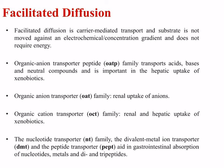Facilitated diffusion is a carrier-mediated transport where the substrate is not moved against an electrochemical or concentration gradient and does not require energy. Examples include the organic anion transporter peptide (OATP) family, which transports acids, bases, and neutral compounds and is important in hepatic uptake of xenobiotics. Other transporter families include the organic anion transporter (OAT) family for renal uptake of anions, and the organic cation transporter (OCT) family for kidney and liver uptake of foreign chemicals. Notable transporters also include the nucleotide transporter family, the divalent metal ion transporter, and the peptide transporter, all of which can aid gastrointestinal absorption of nucleotides, metals, and di- and tripeptides.